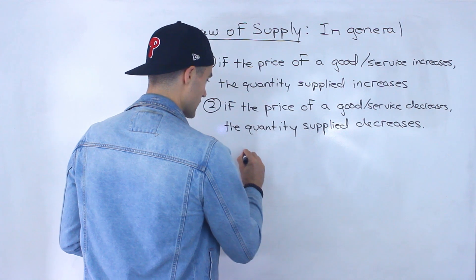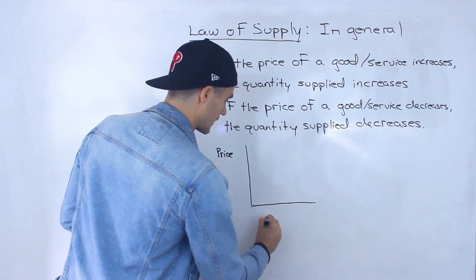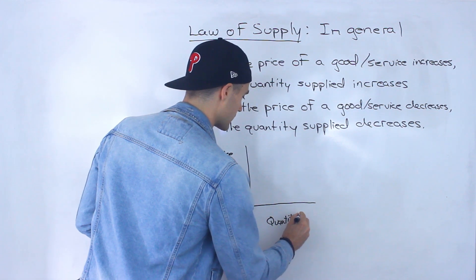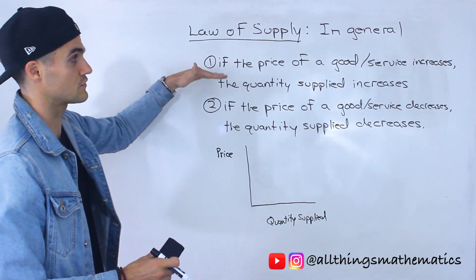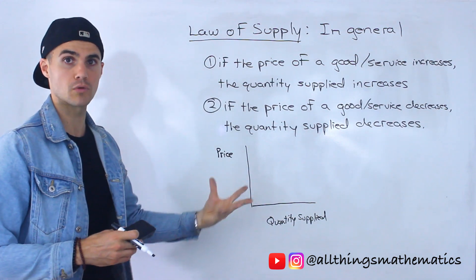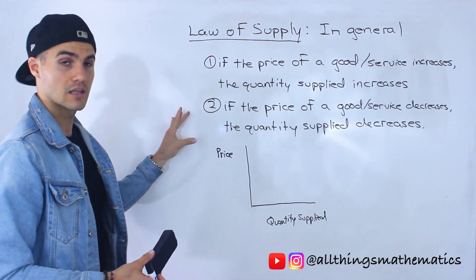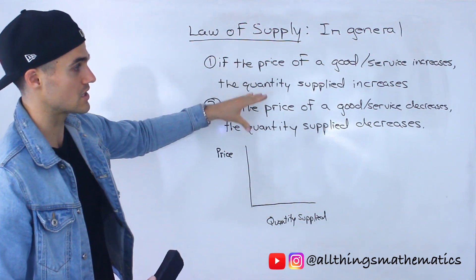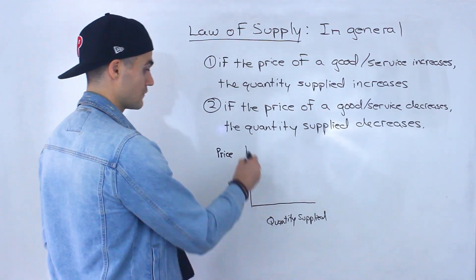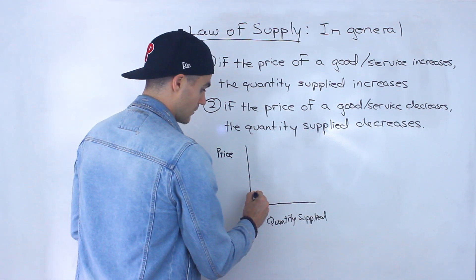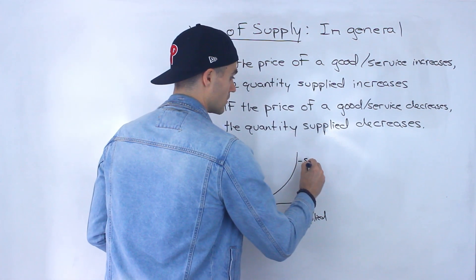We can show this visually, like we did with demand — we'll have the price of the good or service on one axis and the quantity supplied on the other. Notice that the law of supply is kind of the opposite of the law of demand: when price increased, demand decreased from the consumer's point of view. But with supply, it's the opposite — price increases, quantity supplied increases; price decreases, quantity supplied decreases. We can represent this with an upward-sloping curve called the supply curve.